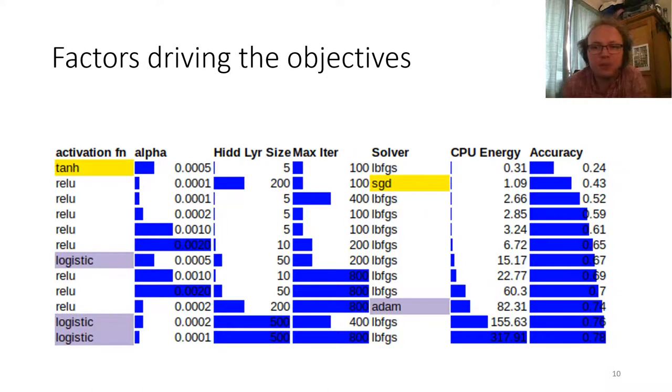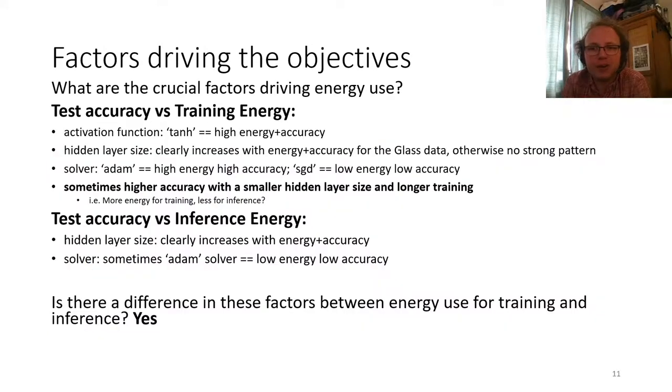The next part of the study was a deeper dig into what was driving the trade-off between energy and accuracy. So we created a lot of visualizations like this one, where we have each row being a hyperparameter configuration from the Pareto front, and the columns being features, and the energy and accuracy, so we're able to draw out any patterns. Things like in this particular one, logistic regression seems to be appearing at the high energy high accuracy end of the trade-offs.